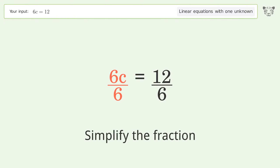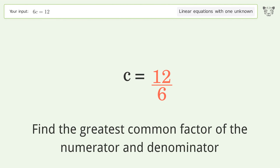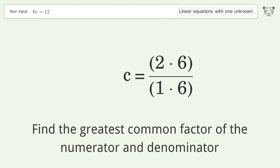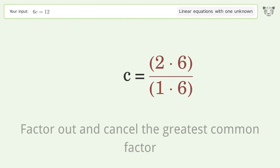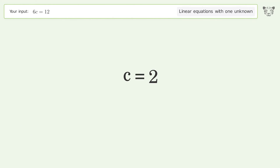Simplify the fraction by finding the greatest common factor of the numerator and denominator. Factor out and cancel the greatest common factor, and so the final result is c equals 2.